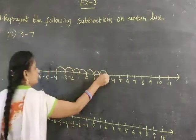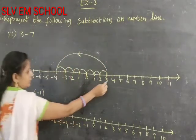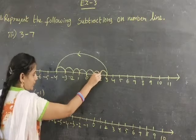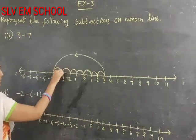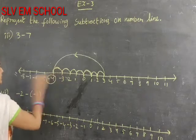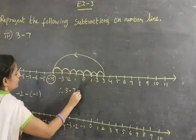Count 1, 2, 3, 4, 5, 6, 7. Total 7 steps move on the left side. Start from 3, go 7 steps left on the number line: 3, 4, 5, 6, 7. You get the answer is negative 4. Therefore 3 minus 7 equals negative 4.